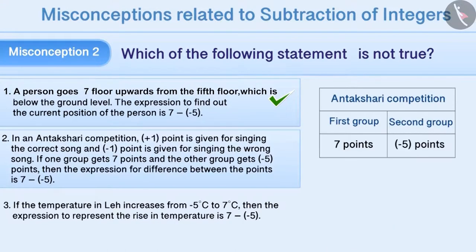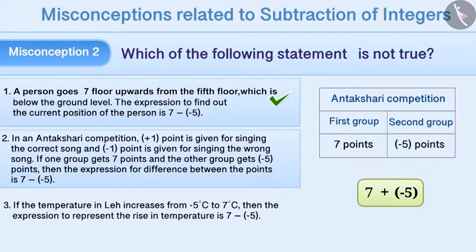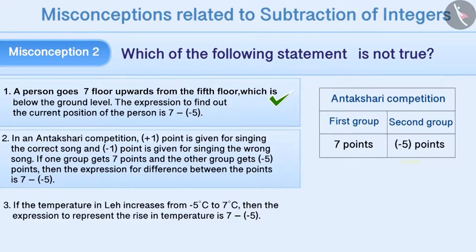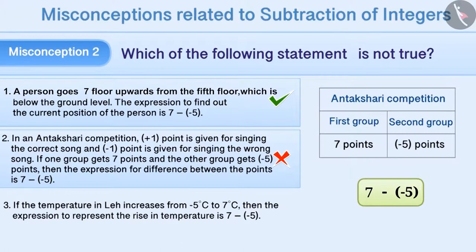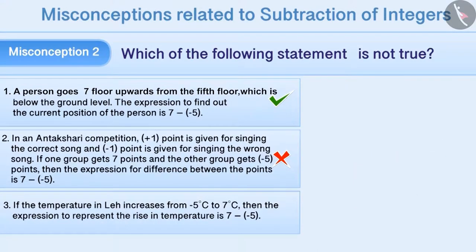The second statement says that one group gets 7 and the other group gets minus 5 points. Sometimes, in order to find the difference between the points, the operation of addition is performed and the expression is written as 7 plus minus 5. Therefore, the second statement is considered false and option 2 is chosen as the answer. But this is a misunderstanding. To find the difference between the points, lesser points are subtracted from more points. Therefore, the expression will be 7 minus minus 5. That means the second statement is true. This cannot be the answer to the given question.